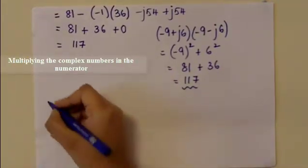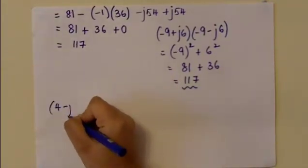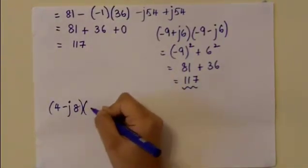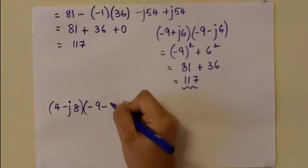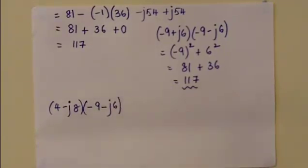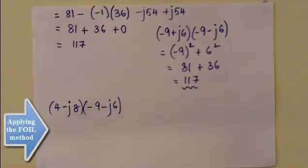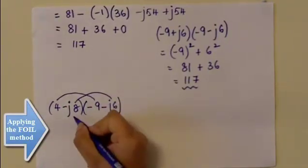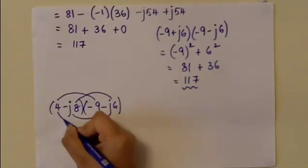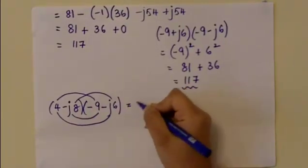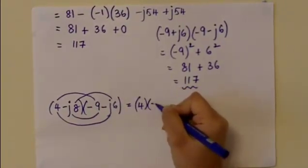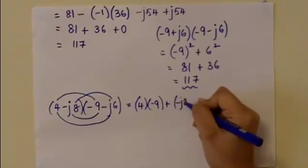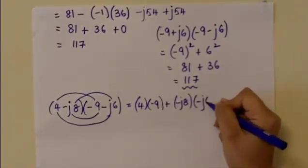The next step is to multiply the complex number in the numerator, which is (4 - j8), by the conjugate of the complex number in the denominator, which is (-9 - j6). Applying the FOIL method again: multiplying the first, the outsides, the insides, and the last terms. We have 4 times (-9) plus the outsides (-j8) times (-j6).